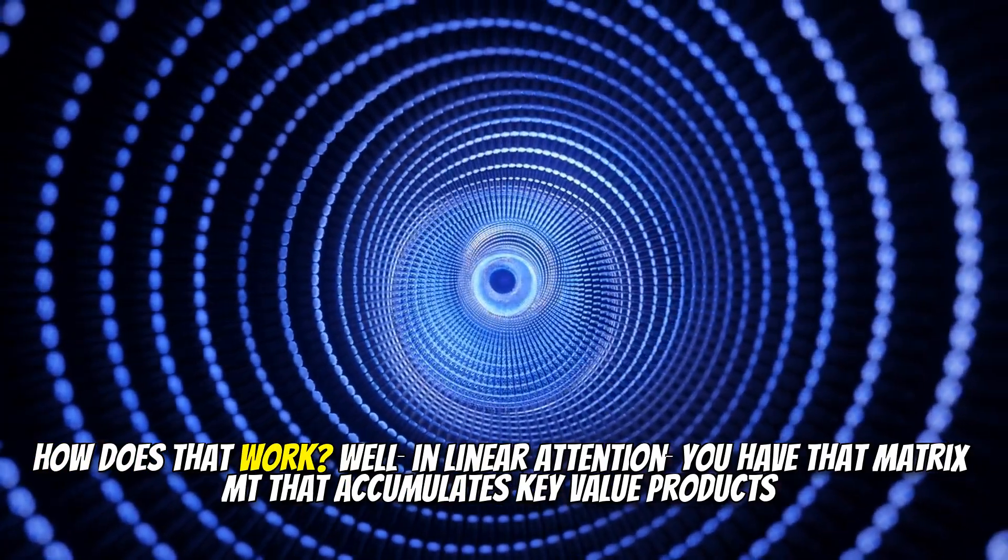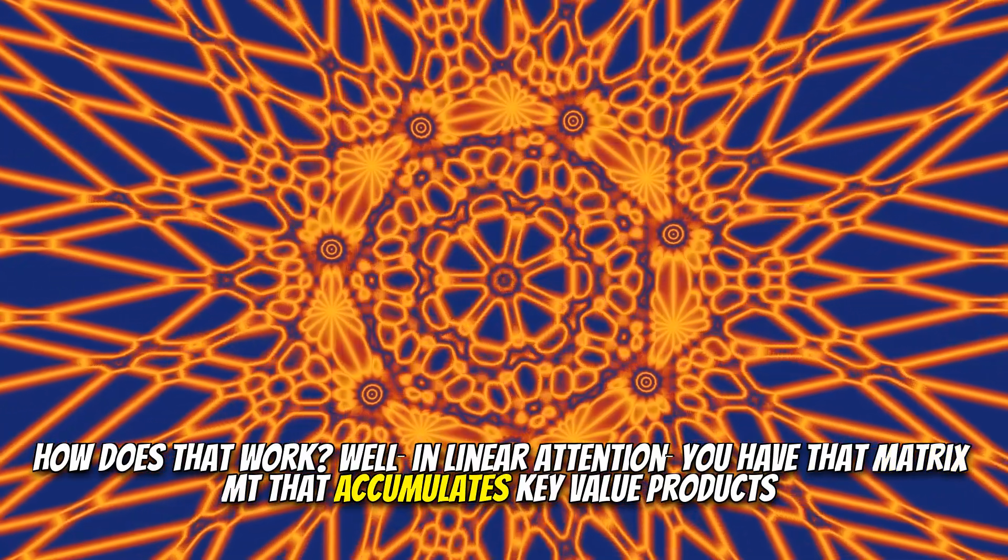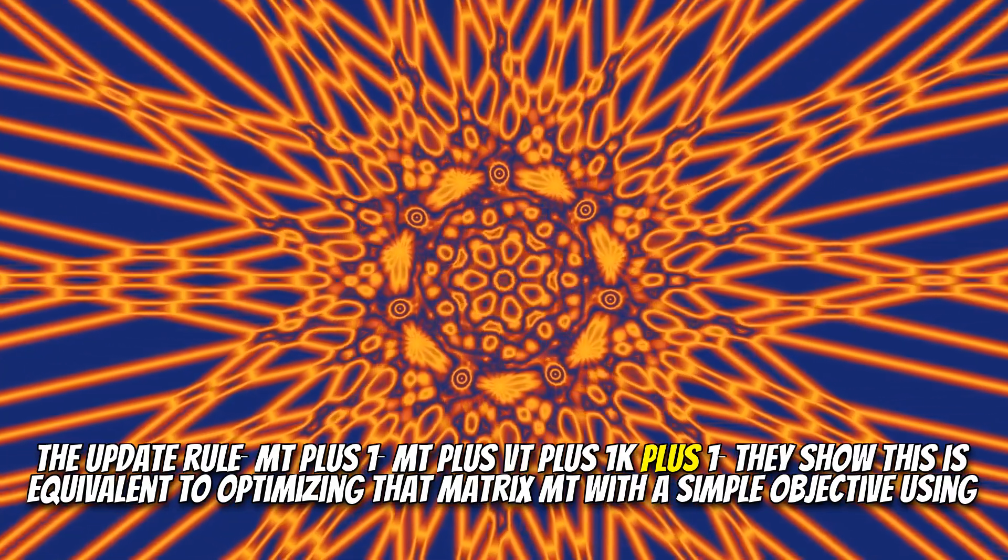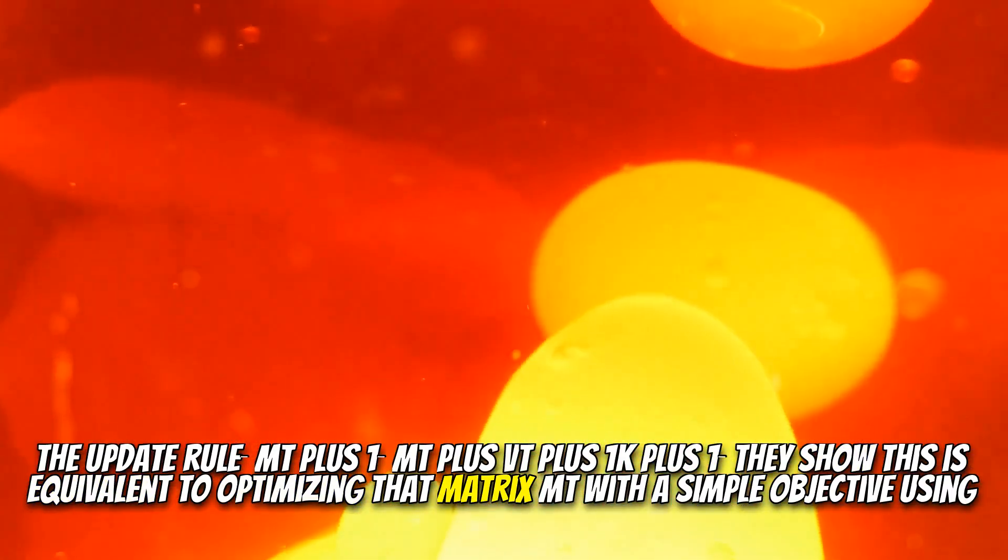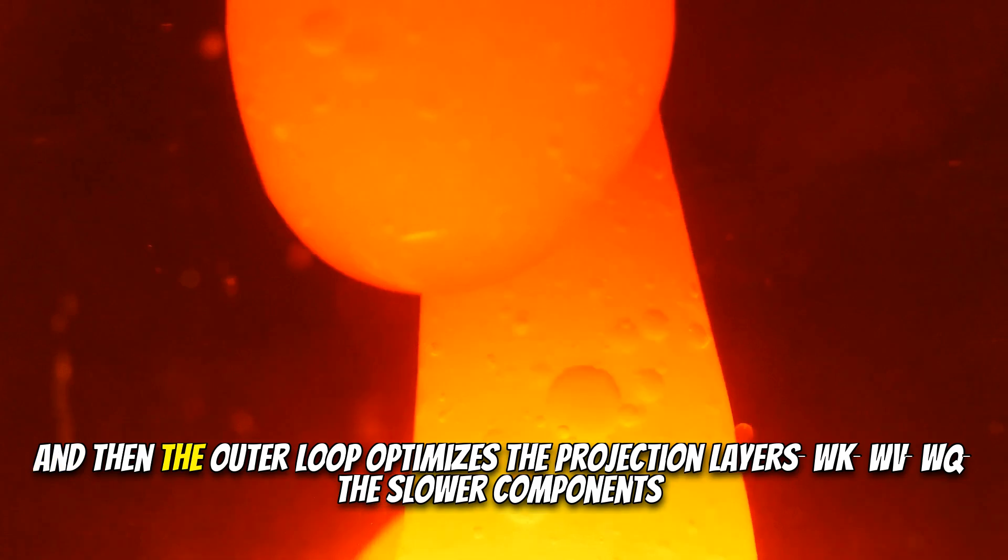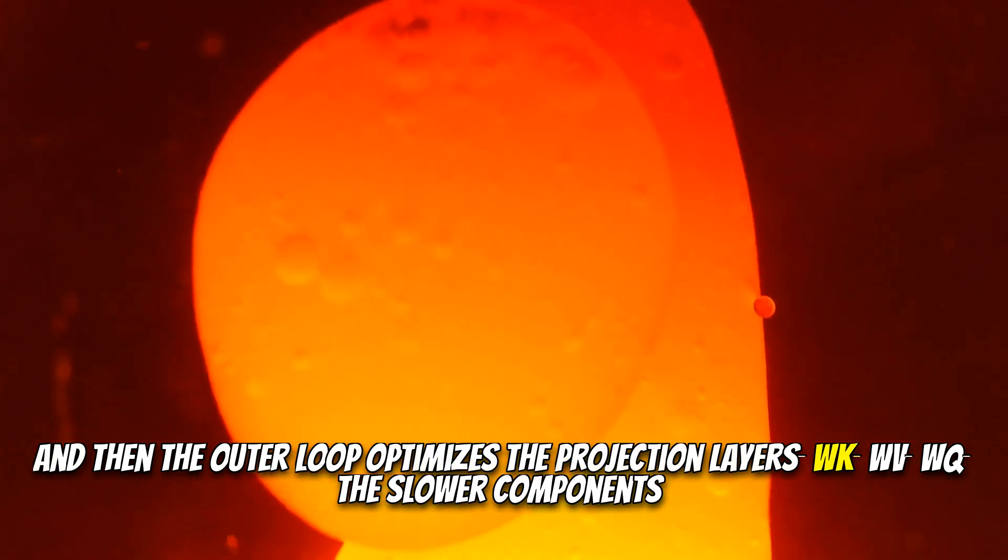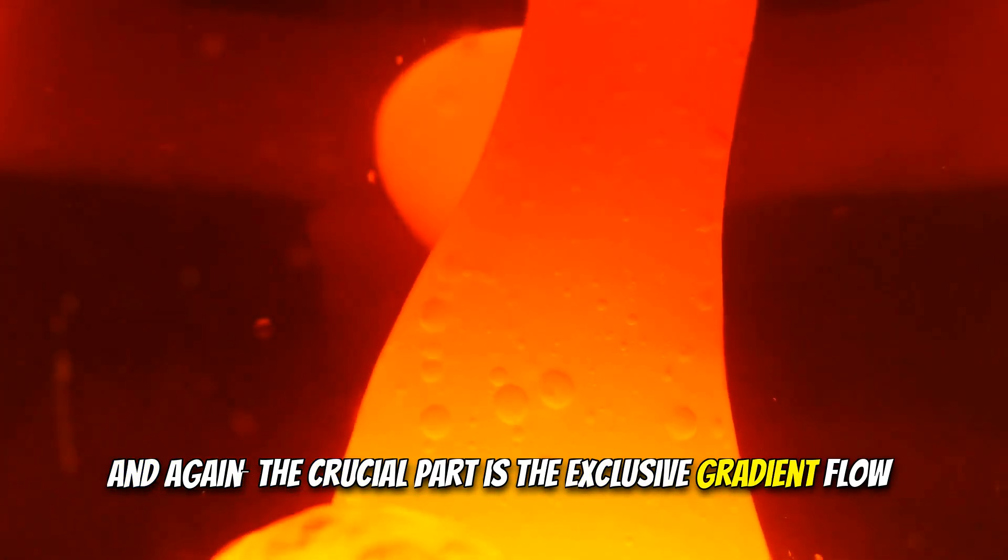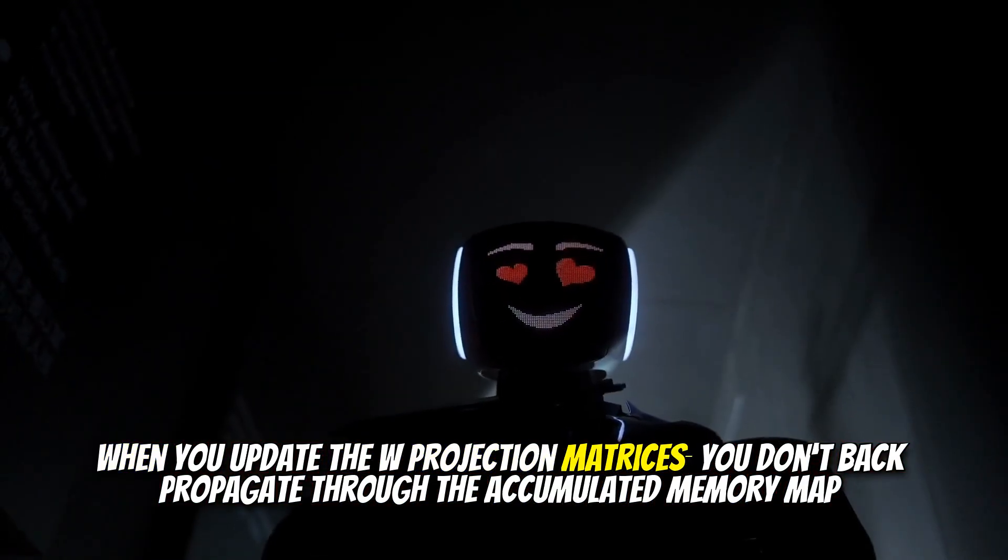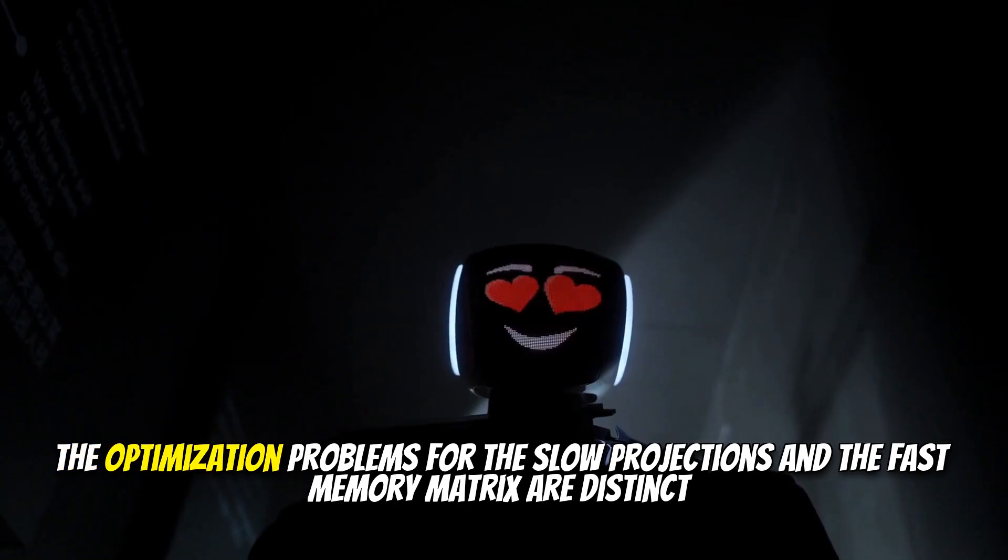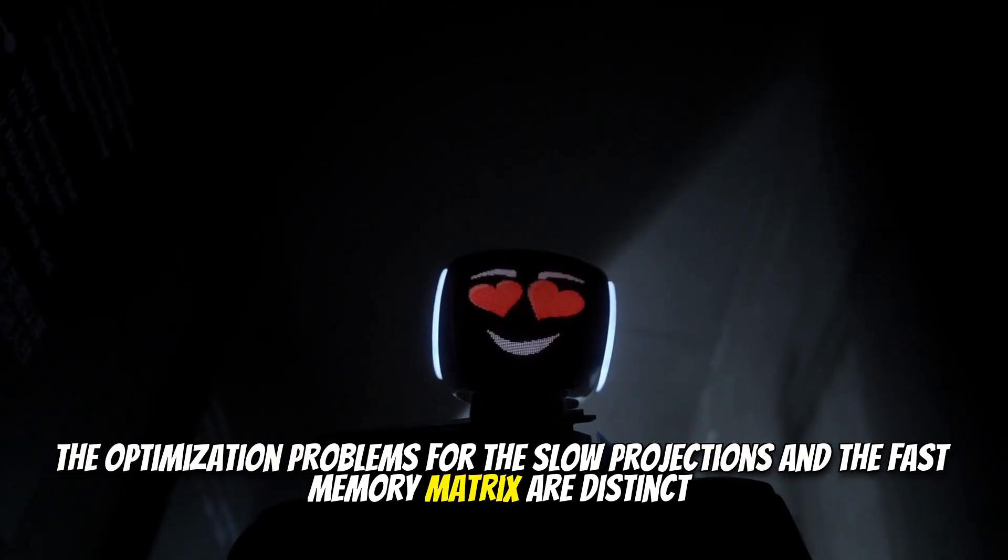Doing what? Its job is to compress the history of past gradients. It has its own little optimization objective implicitly defined by the momentum update rule, which is basically a simple gradient descent step trying to summarize past surprises. Wow. Okay. So momentum is a tiny, fast-updating memory system nested inside the main weight updates. That's the NL perspective. And they show this same two-level structure pops up elsewhere, like in linear attention mechanisms. Ah, interesting. How does that work? Well, in linear attention, you have that matrix MT that accumulates key value products. The update rule, MT plus 1, MT plus VT plus 1, K plus 1, they show this is equivalent to optimizing that matrix MT with a simple objective using GD. That's the fast inner loop associative memory. Okay. Remembering the key value associations. Right. And then the outer loop optimizes the projection layers, WK, WV, WQ, the slower components.